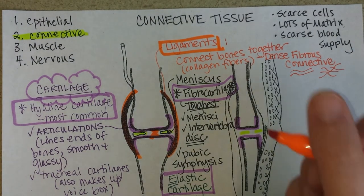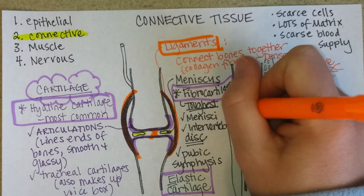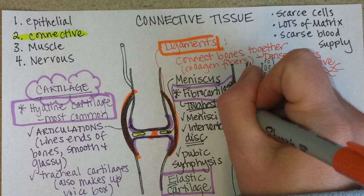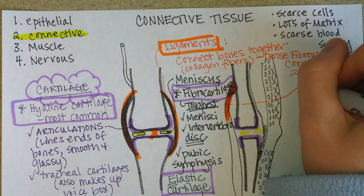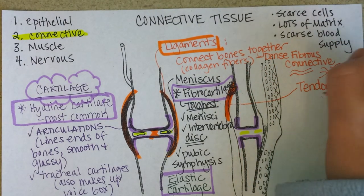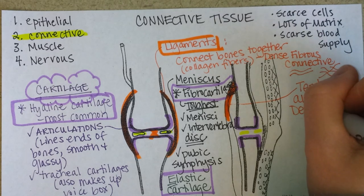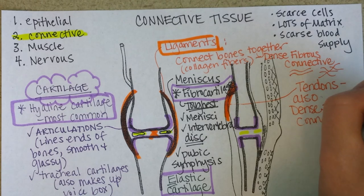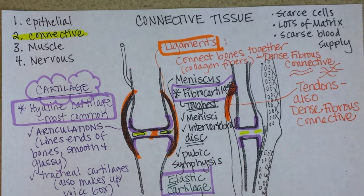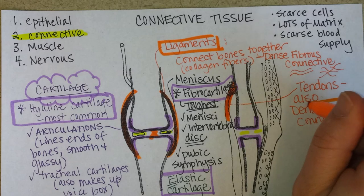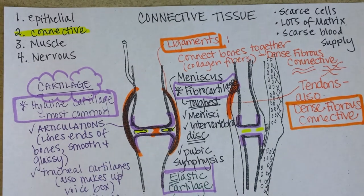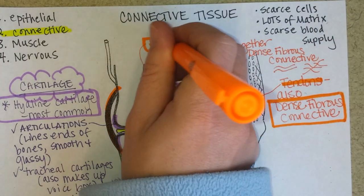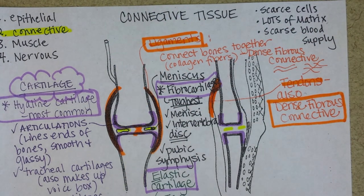Let's use our orange highlighter again. Here is a muscle attaching to a bone — muscles attach to bone via tendons. So tendons are also dense fibrous, mostly collagen fibers. Both tendons and ligaments are made of dense fibrous connective tissue.